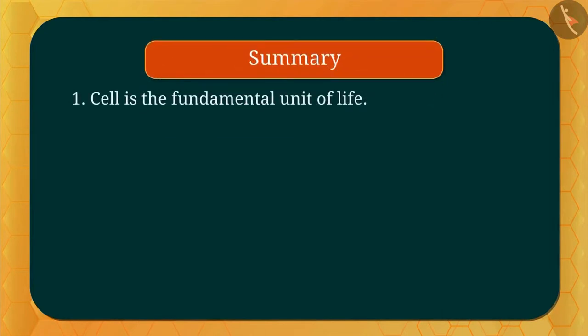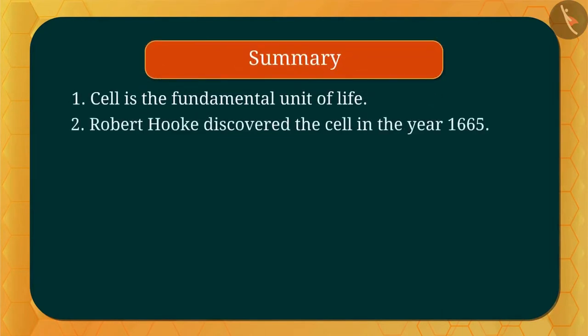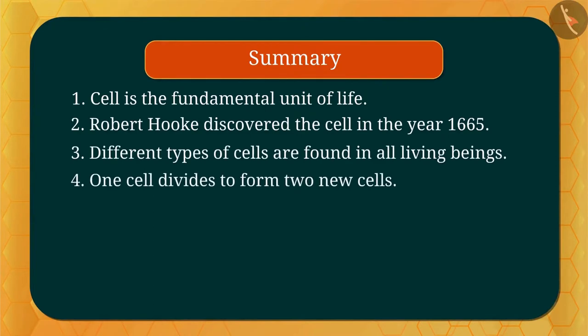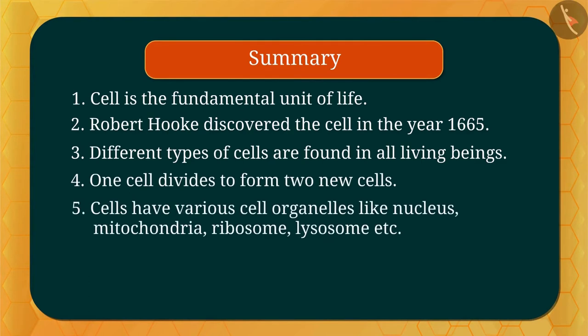So what did we learn in this video? Cell is the fundamental unit of life. Robert Hooke discovered the cell in the year 1665. Different types of cells are found in all living beings. One cell divides to form two new cells. Cells have various organelles like nucleus, mitochondria, ribosome, lysosome, and others. Now we will learn about cell envelope and osmosis.